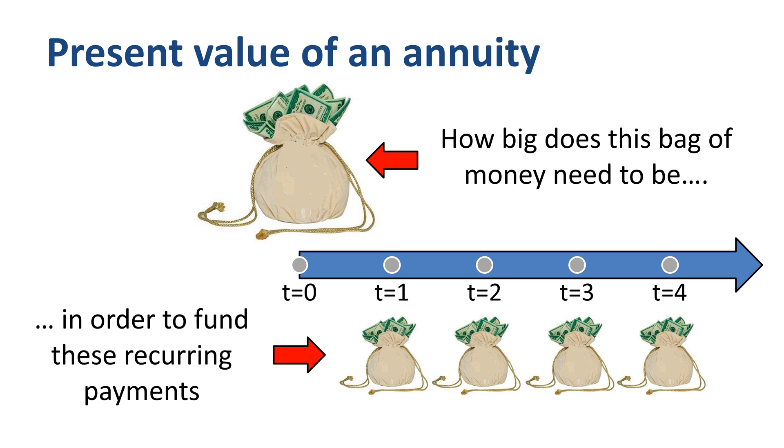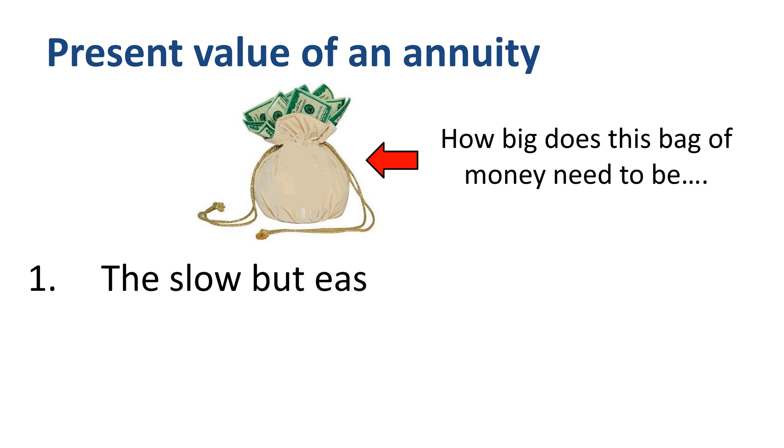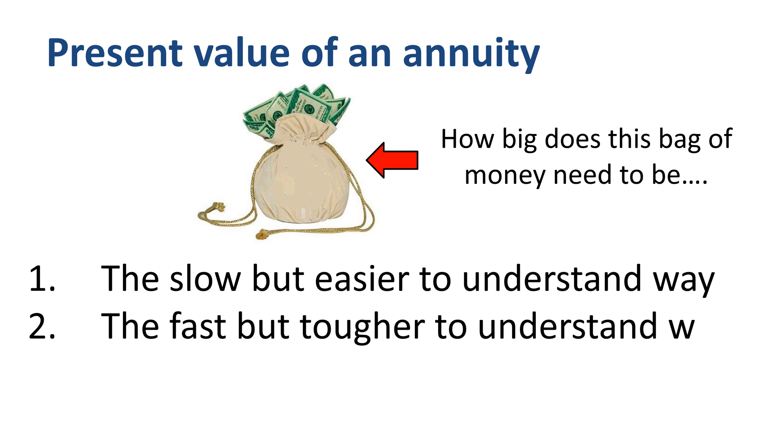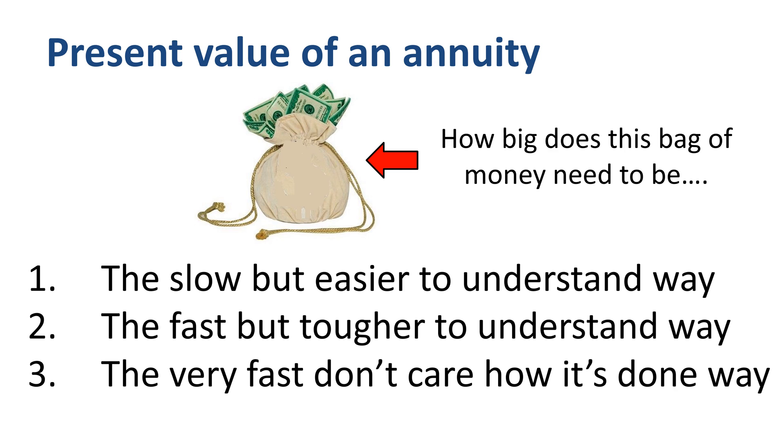There are multiple ways to calculate the present value of an annuity. There is the slow but easier to understand way, the fast but tougher to understand way, and the very fast and I really don't care how it's done way. In order to properly understand the present value of an annuity, start with the first method, and then progress to the faster methods.